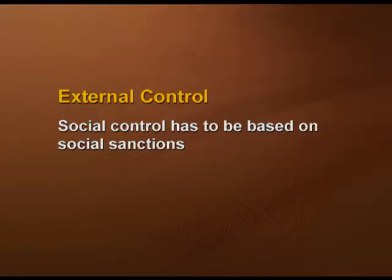External social control is based on social sanctions — rewards and punishments designed to encourage desired behavior. There are positive and negative sanctions. If a sanction is given by friends or family, it becomes an informal sanction; if given by an authority like a school, it becomes a formal sanction.